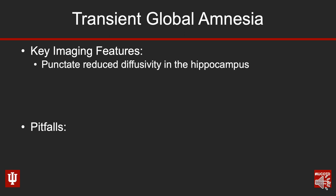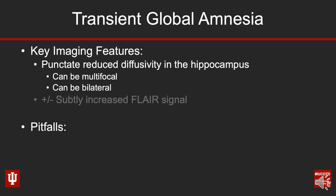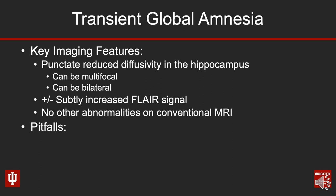Let's wrap this up. This was a case of transient global amnesia. The key imaging features to know are the classic finding of a punctate focus of reduced diffusivity within the hippocampus. Importantly, this can be multifocal and bilateral, but most commonly it will be unilateral. There may or may not be subtle increased FLAIR signal abnormality, but it should correspond right with that little dot of restricted diffusion — it should not be diffuse FLAIR signal abnormality throughout the hippocampus, and there really should not be any other abnormalities on conventional MRI sequences.